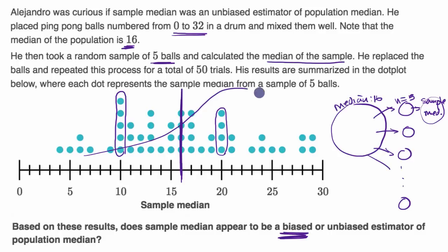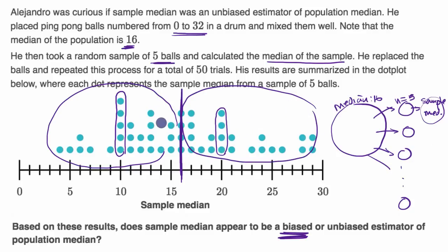Or if it was looking something like that, we'd say, okay, that looks like a biased estimator. But if this approximation for our sampling distribution that Alejandro is constructing, where we see that roughly the same proportion of the sample statistics came out below as came out above the true parameter, and it doesn't have to be exact, but it seems roughly the case, this seems pretty unbiased.